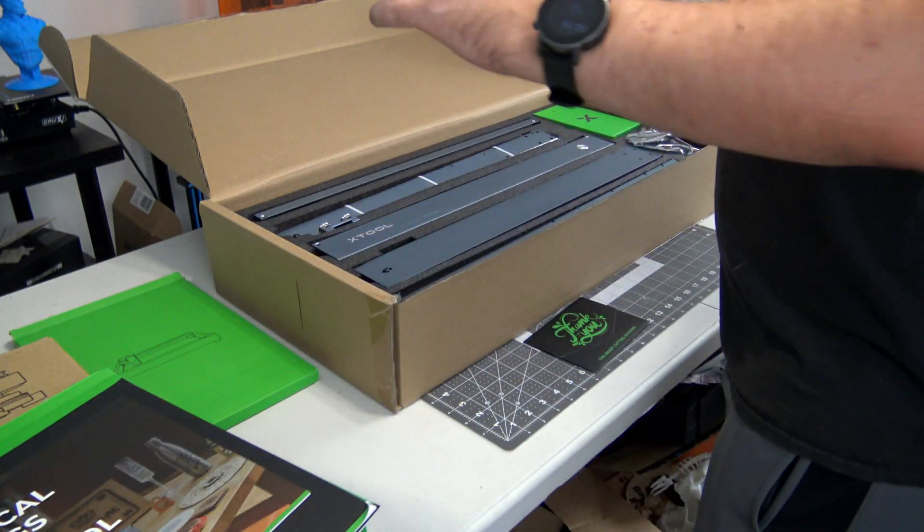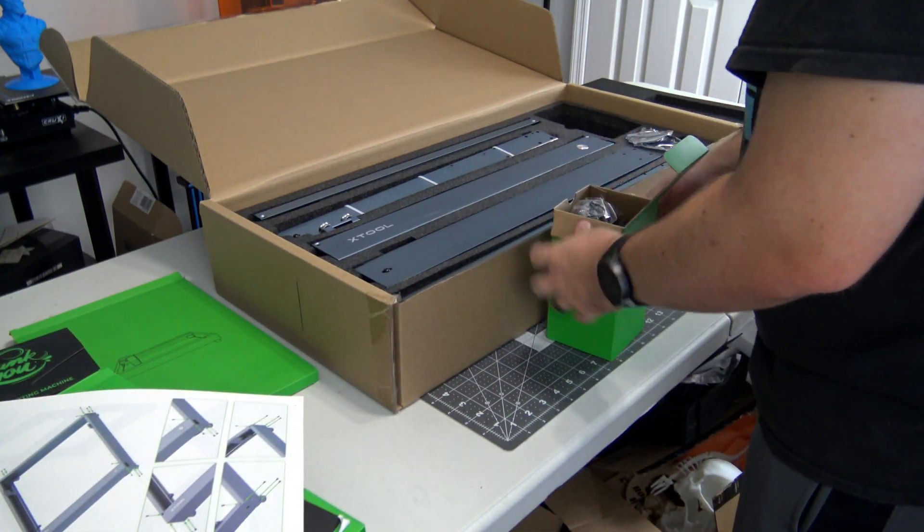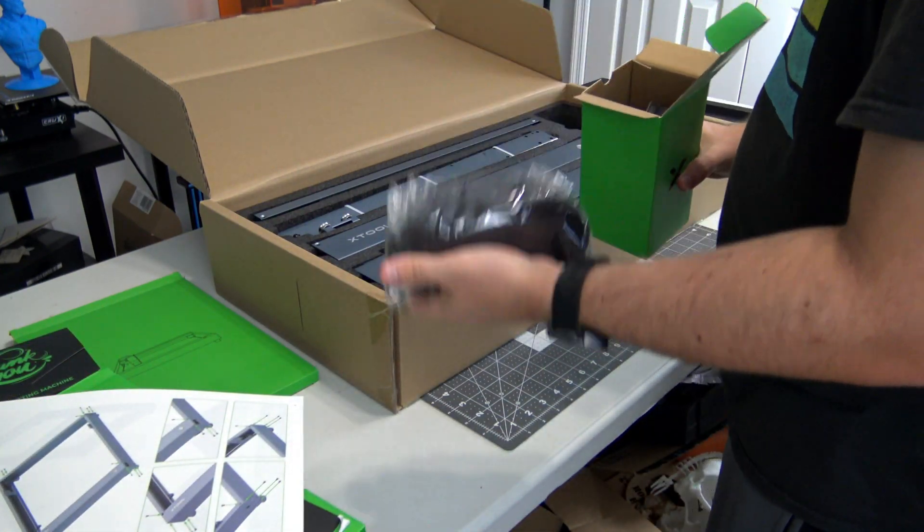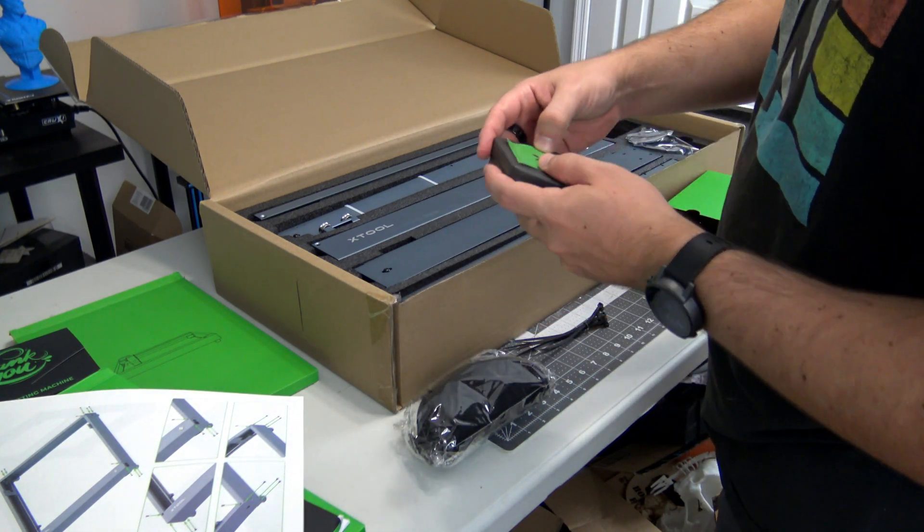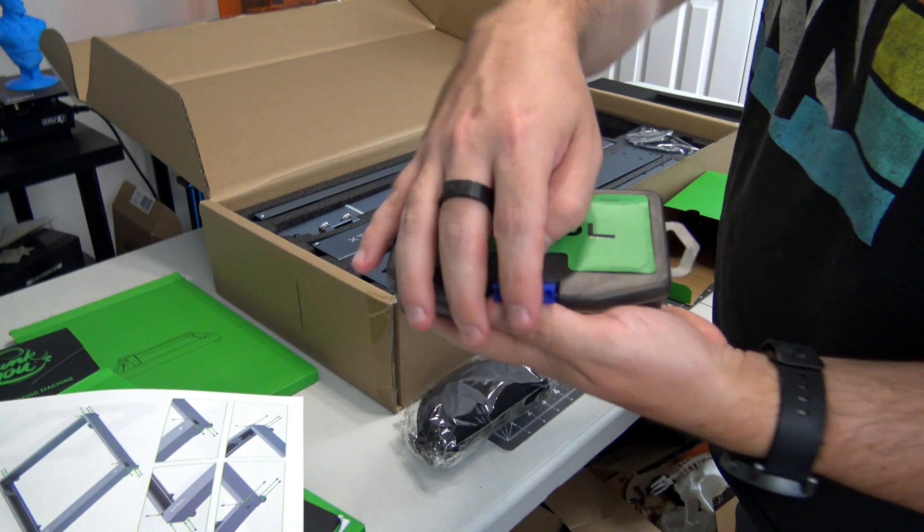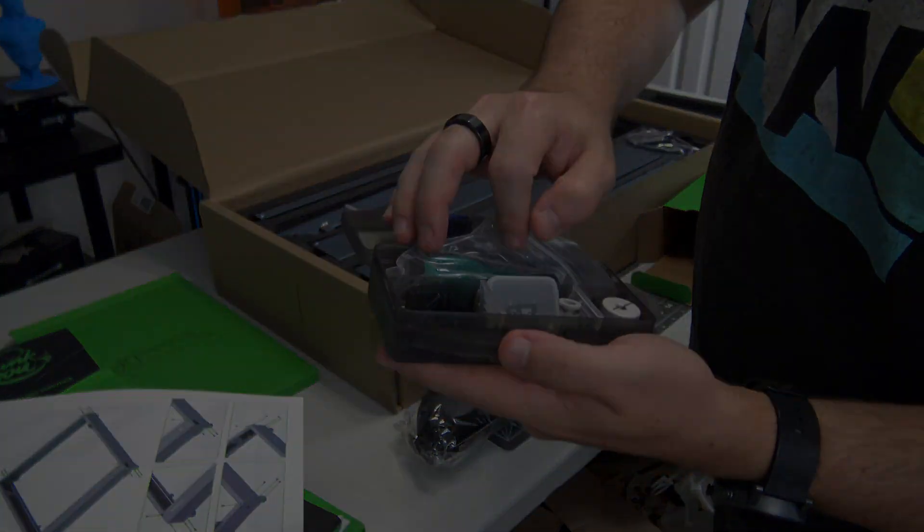The D1 Pro also comes with a pair of protective goggles, which you should always wear when using the laser. A tube of grease, a USB cable, cable ties, and a nice box with all of the tools needed for assembly. It also comes with a small sheet of aluminum to protect your workbench. With hardware done, let's talk software.